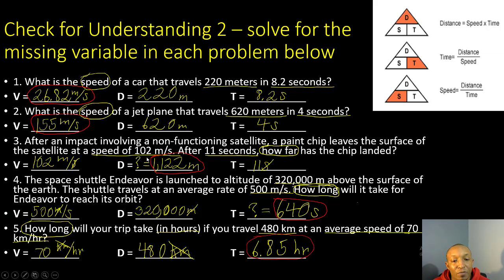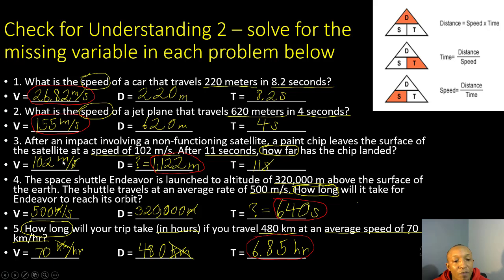Number three: after an impact involving a non-functioning satellite, a paint chip leaves the surface at a speed of 102 meters per second. After 11 seconds, how far has the chip landed? We're solving for distance. Speed × time: cross out the matching seconds, leaving meters. 102 × 11 = 1,122 meters.